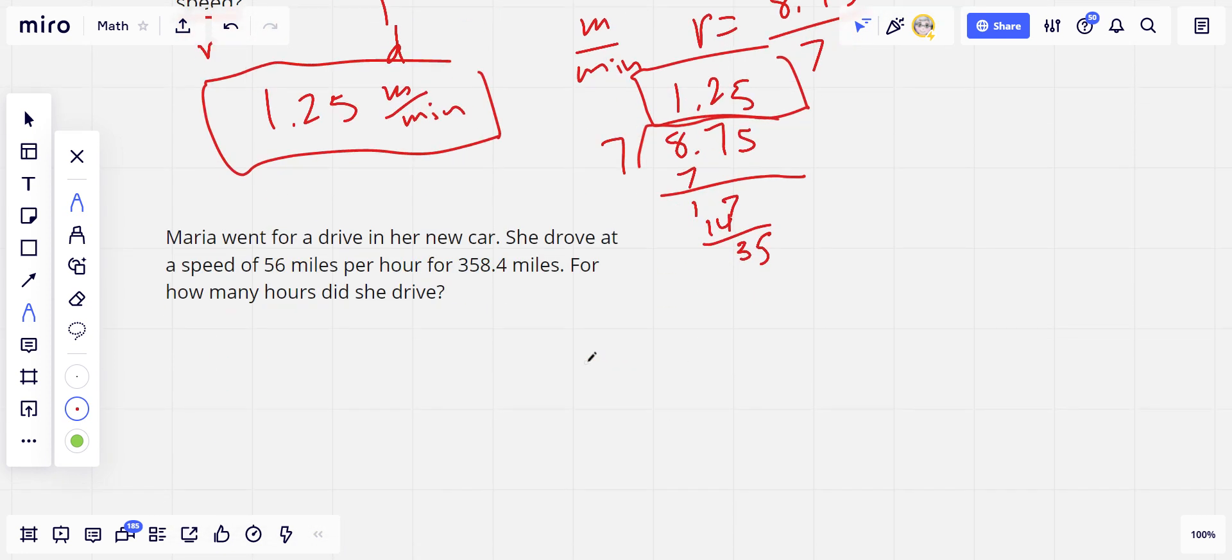All right, let's try one more. This one says Maria went for a drive in her new car. She drove at a speed of 56 miles per hour - so that's our rate - for 358.4 miles, that looks like distance. For how many hours did she drive? So we're trying to find time.